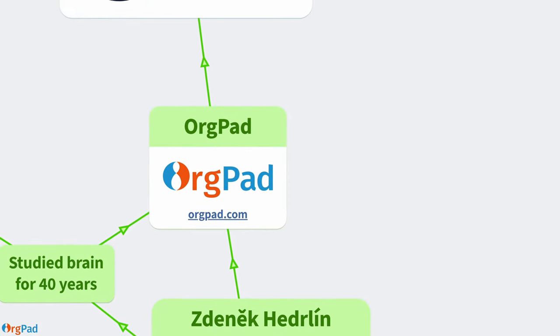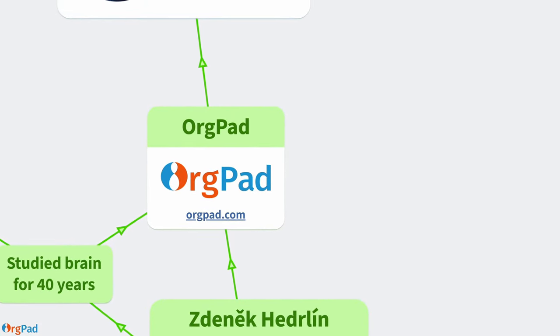You can experiment with OrgPad at the address OrgPad.com. If you find it helpful, it would be great if you can support our work. You can save 20% by using the promo code SUMFREE.